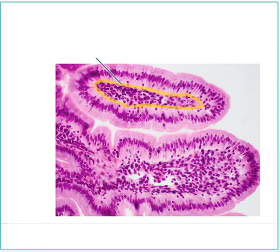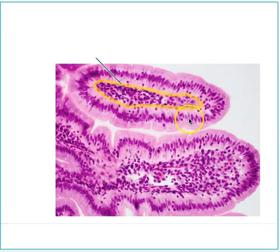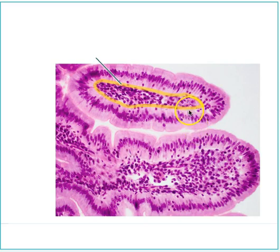That is the basement membrane. And the tissue type, if you're curious, this tissue type here is columnar. We see the size and shape of the nucleus. We also see that we can see a lot of the cytoplasm of the cell. It is taller than it is wide, has this elongated nucleus. This is absolutely simple columnar epithelium.